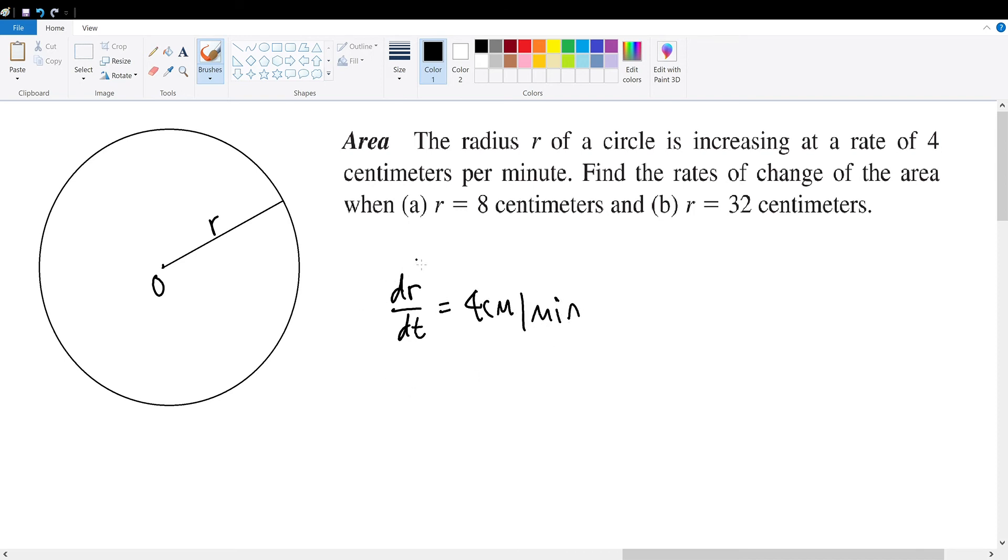And what this is telling us is, how is the radius of the circle changing when time represented by t is changing? It is changing at 4 centimeters per minute. 4 centimeters being the change in radius, the minute being the change in time.